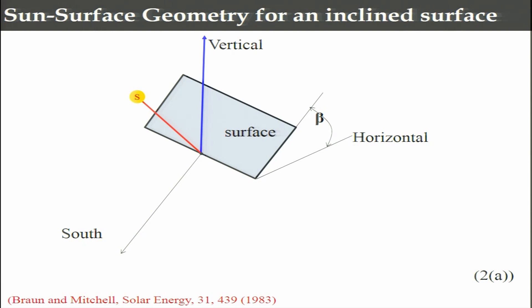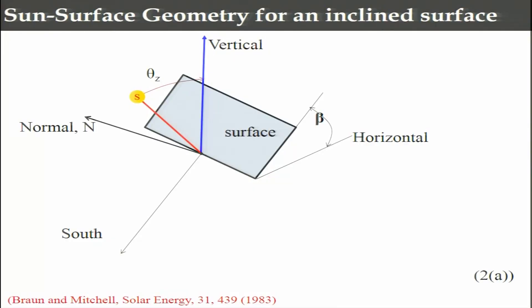The sun ray comes at a certain angle to the horizontal, but since the surface is at angle beta with respect to the horizontal, you need to make a correction. Beta has to be subtracted from the total overall angle. The zenith angle is the angle between the vertical and the sun. The normal to the surface N differs from the vertical - the angle between the normal and vertical equals beta, since the surface makes angle beta with the horizontal.